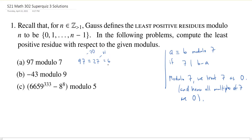And 6 is a least positive residue because it's between 0 and 7 minus 1, which is 6. So 97 is congruent to 6 modulo 7.